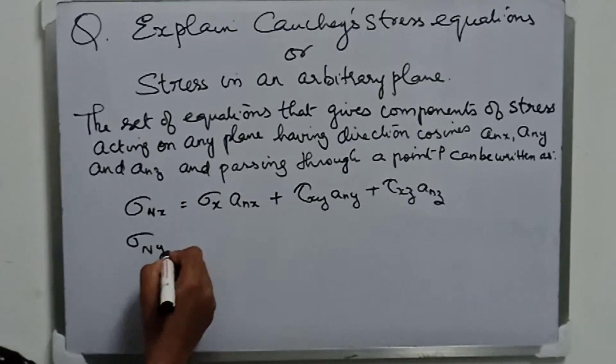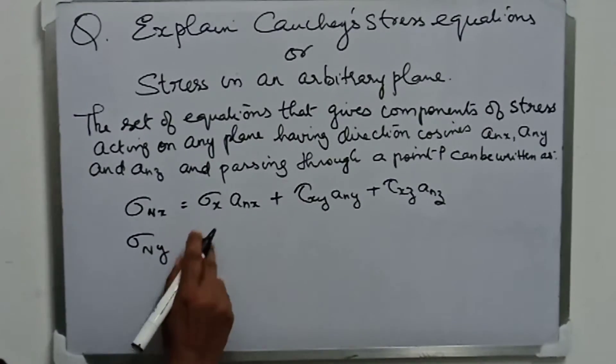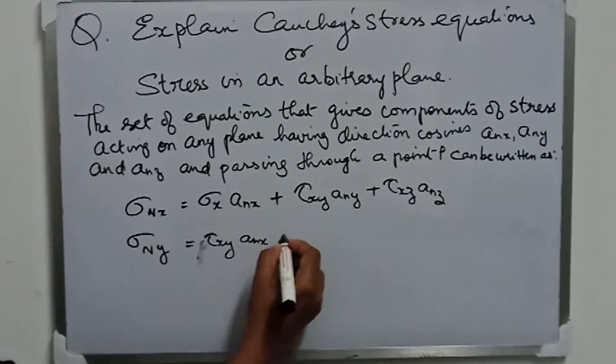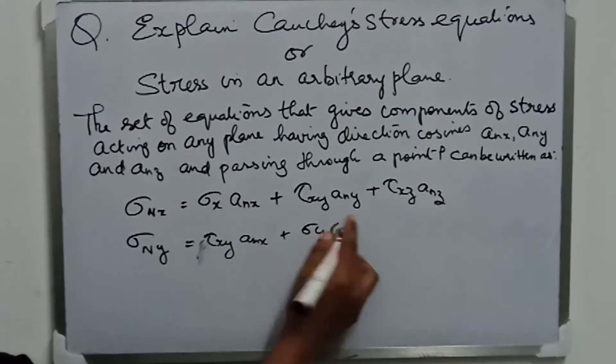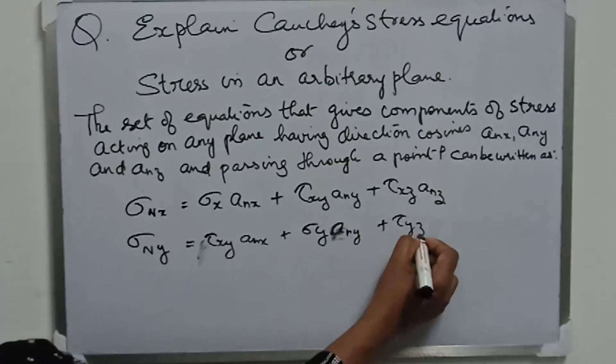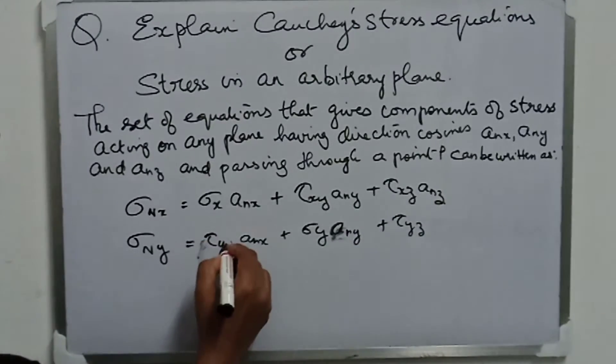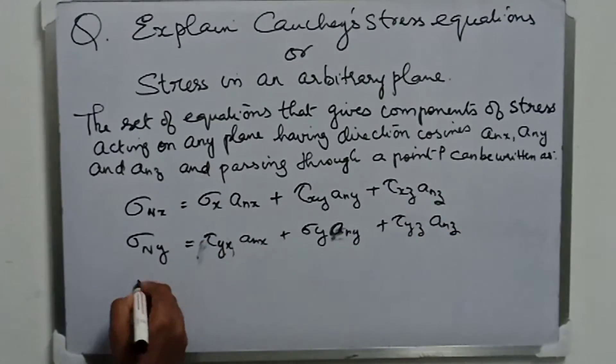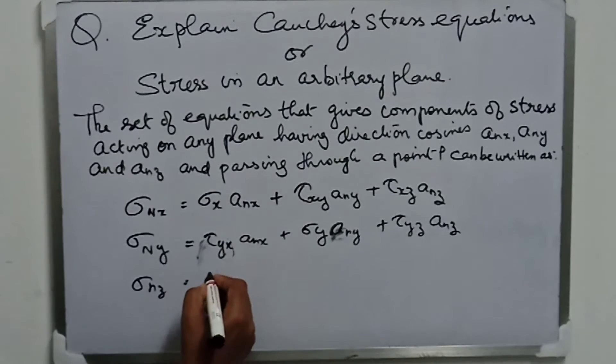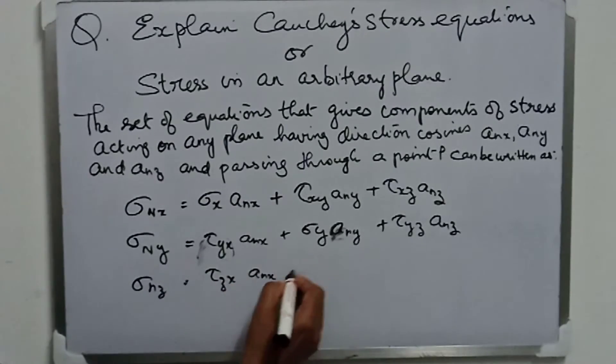Similarly, σny will be equal to τyx times anx plus σy times any plus τyz times anz.